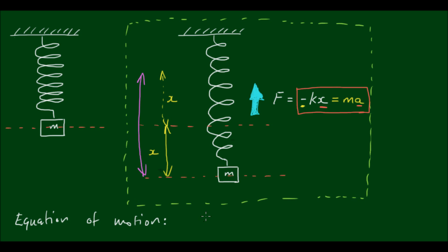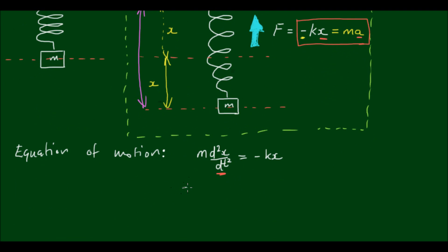And I'm going to write it like this: mass times the second derivative of the displacement with respect to time. So this term is equal to the acceleration, which is equal to negative kx. And so this implies that m times the second derivative of the displacement with respect to time plus kx is equal to zero.